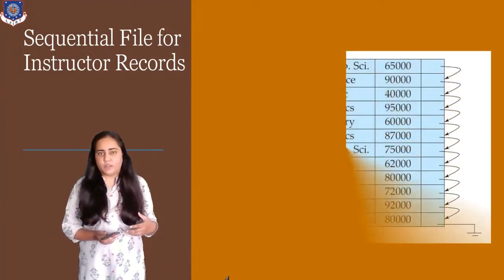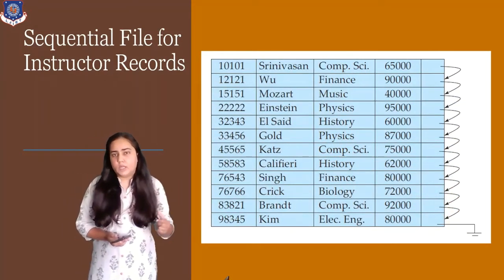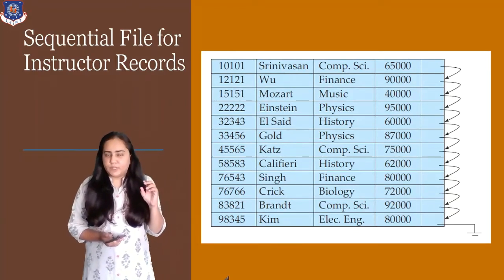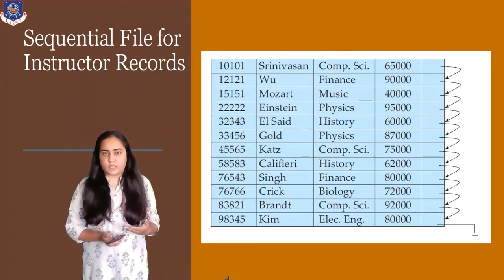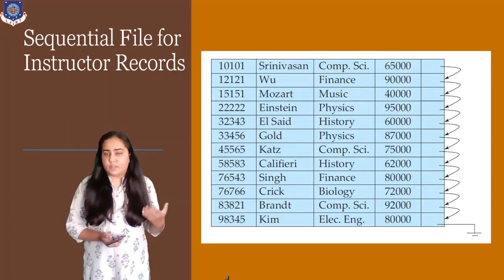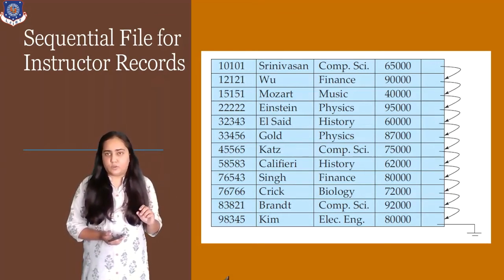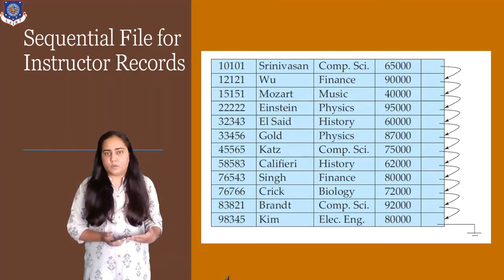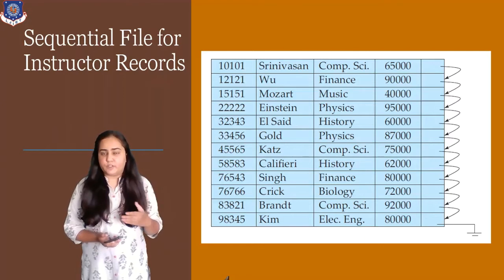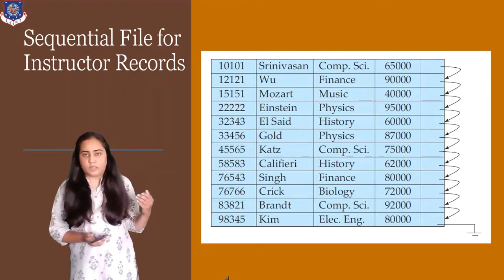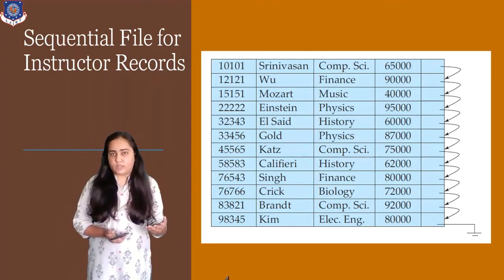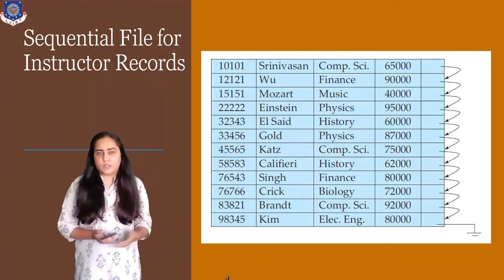To do that, you require a sequential file for instructor records, where the first row of instructor points to the second row by storing the address of the second row, because it's not necessary that both rows are stored in consecutive blocks. So we store the address of the next row with the first row. When SELECT * FROM instructor is typed, the entire table is returned one by one, because the first row is fetched, its address leads to the next, and so on.